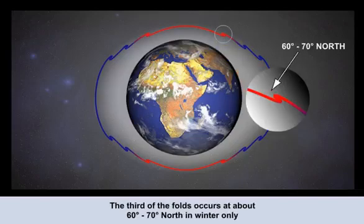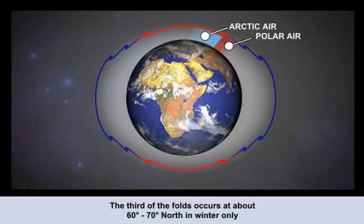The last of the tropopause breaks occurs at even higher latitudes, and is evident mainly in the northern hemisphere in winter. This is where very cold arctic air meets less cold polar air, typically at about 60 to 70 degrees latitude. The temperature difference here is also enough to cause another tropopause fold or break.